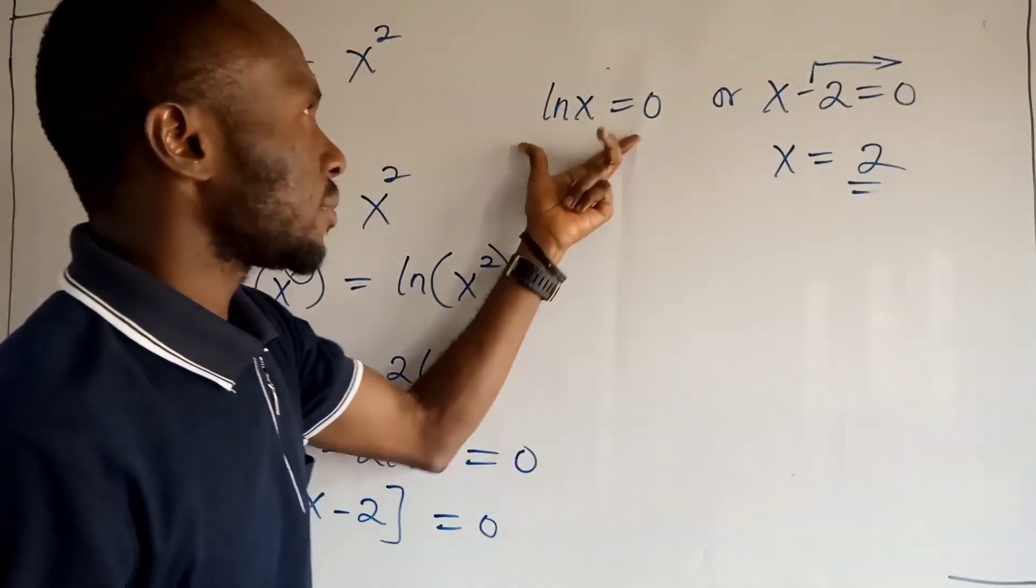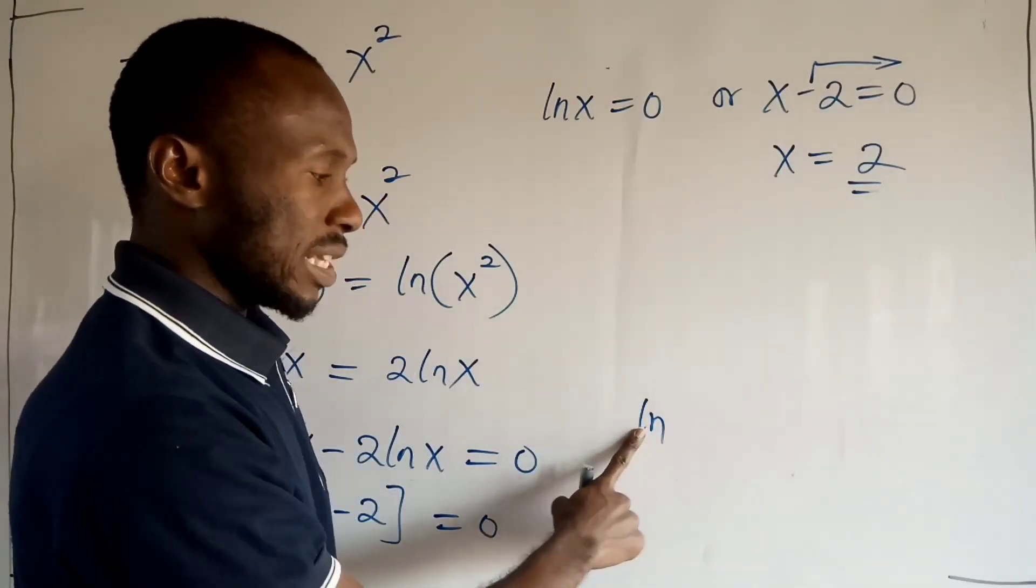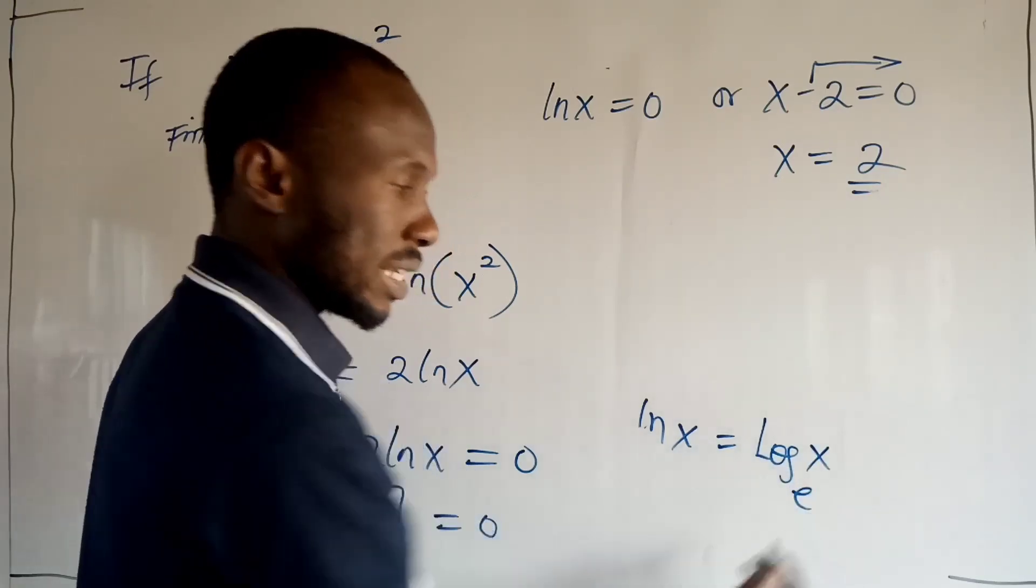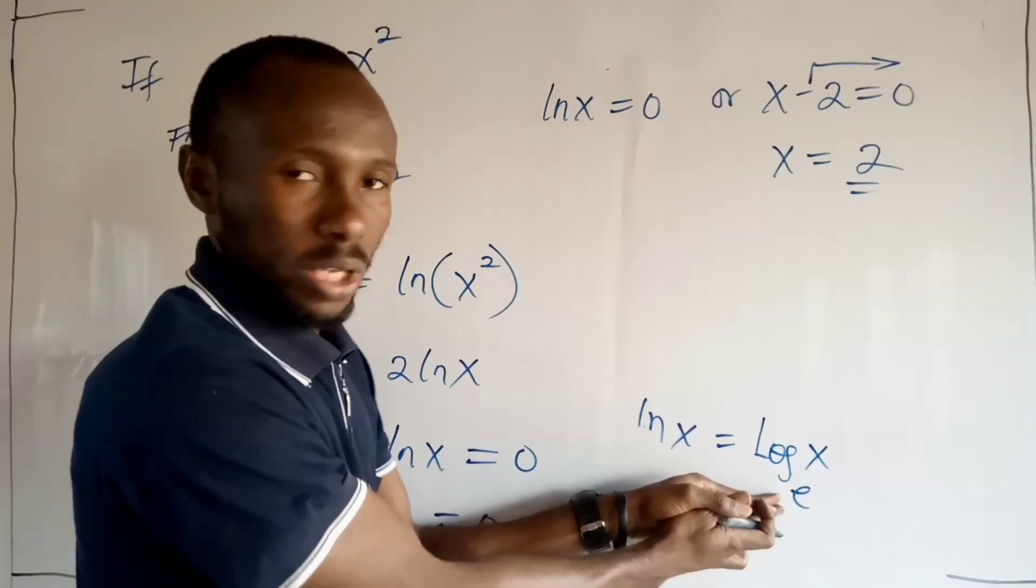Now for this, I want you to remember that ln x can also be written as the logarithm of x to the base e, okay? That is what the natural logarithm of x is all about. Just a base e. A logarithm to a base e, right?